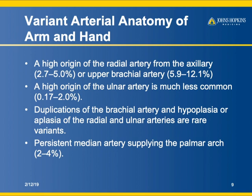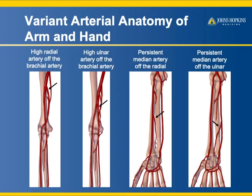Like all vessels, there are variations. A high origin of the radial artery from the axillary or upper brachial artery is uncommon. High origin of the ulnar is much less common. Duplication of the brachial artery and hypoplasia or aplasia of the radial and ulnar arteries are rare variants. Persistent median arteries supplying the palmar arch can occur in a few percent of cases. Here's a nice example of a high takeoff of the radial or ulnar artery and a persistent median artery — variations you should get used to; they're probably not going to be confused with pathology.